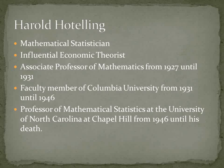Harold Hotelling was a mathematical statistician and an influential economic theorist. He was Associate Professor of Mathematics at Stanford University from 1927 until 1931, a member of the faculty of Columbia University from 1931 until 1946, and a Professor of Mathematical Statistics at the University of North Carolina at Chapel Hill from 1946 until his death. A street in Chapel Hill bears his name. In 1972, he received the North Carolina Award for Contributions to Science.